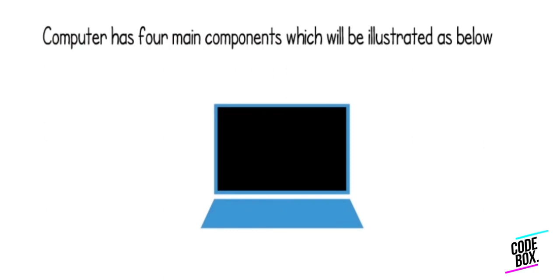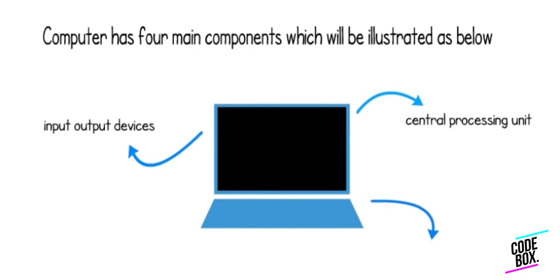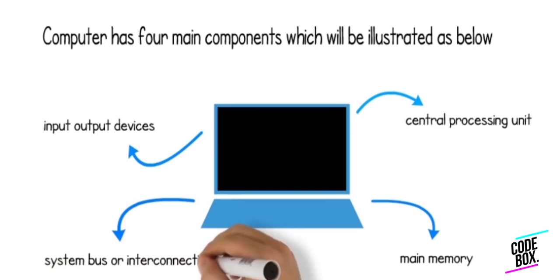The major components of the computer are the central processing unit, input-output devices, memory, and buses or interconnections. These are the main components of the computer.